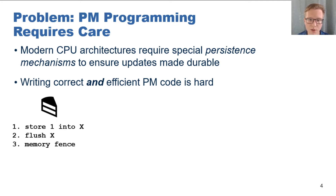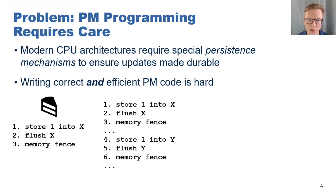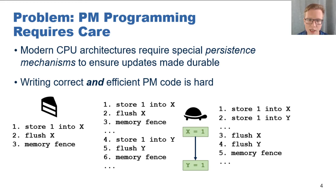However, we encounter some issues as we begin to write more complex applications. We can continue to write flushes and fences after every store, which makes it easy to reason about the ordering of updates in an application, but it becomes slow as you essentially have no memory parallelism in the system anymore. So instead, application developers write more clever code, trying to consolidate expensive memory fences and group flushes together. This can give better performance, but it becomes harder to reason about the ordering of our updates, and this can quickly and easily lead to persistency bugs.